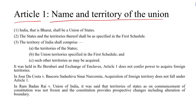First, India, that is Bharat, shall be a Union of States. Second, the states and territories thereof shall be as specified in the First Schedule. Third, the territory of India shall comprise the territory of states and union territories specified in the First Schedule, and such other territories as may be acquired.